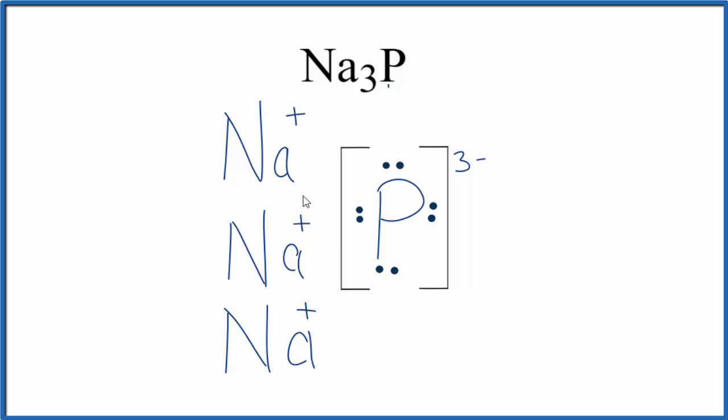So this is the Lewis structure for Na3P, sodium phosphide. Note that this Lewis structure here is called a formula unit. Sodium phosphide is a crystal made up of a repeating pattern of these formula units.